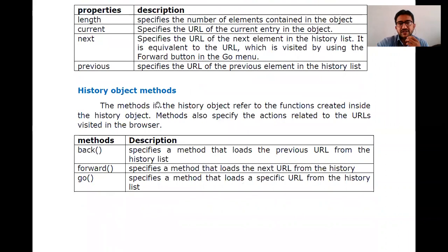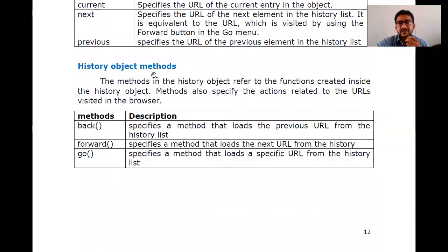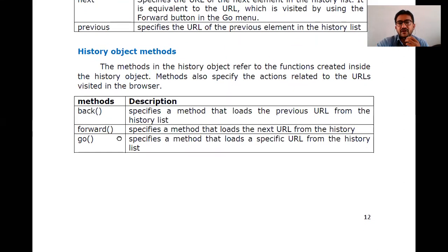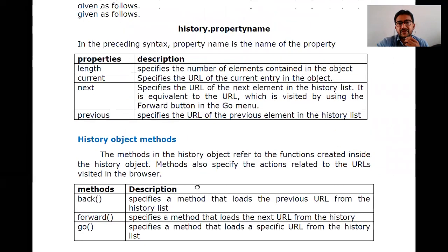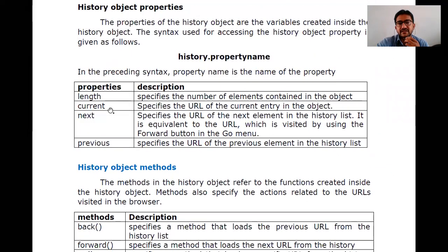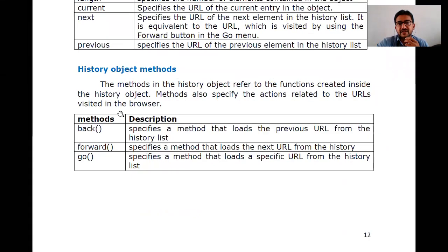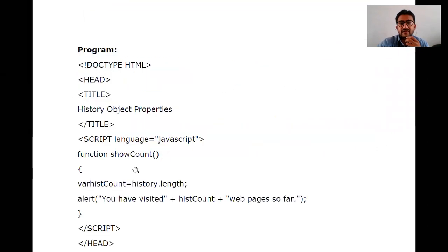Coming to the history object methods — the methods available are: back, forward, and go. So back, forward, and go are the three methods available. To summarize: the properties are length, current, next, and previous; and the methods are back, forward, and go.